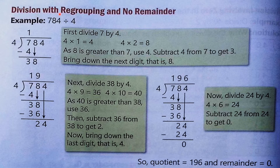Now division with regrouping and no remainder. So 784 divided by 4. First we take the number 7 to divide. In the table of 4: 4×1=4, so 7 minus 4 is 3. Now bring down 8, so this becomes 38.